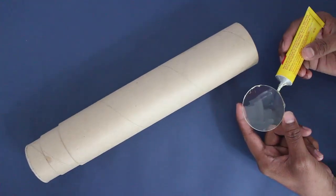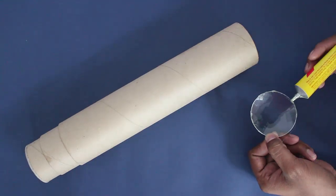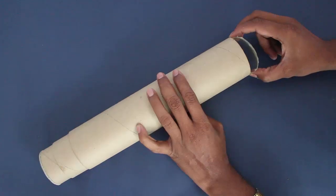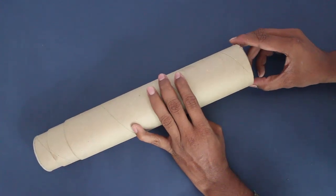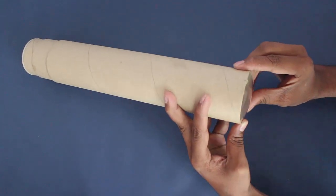Now finally glue the big objective lens on the big end of the tubes. Please ensure that the convex surface of this big lens faces outside the tube.